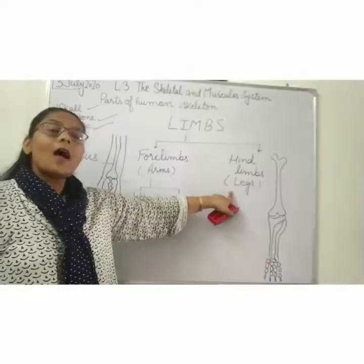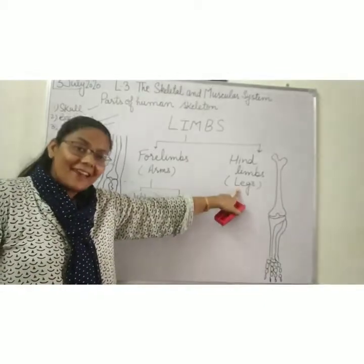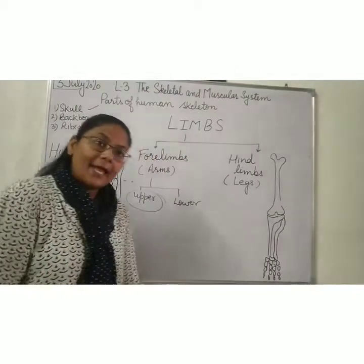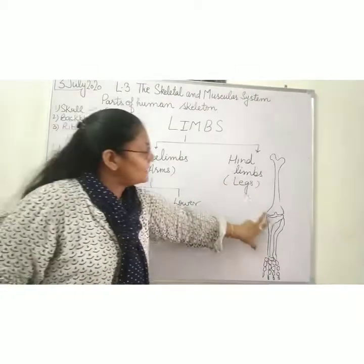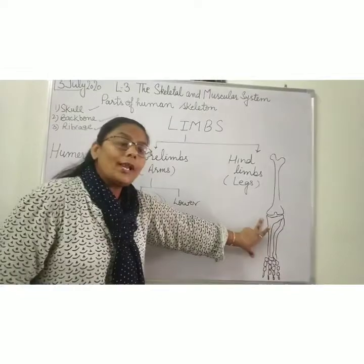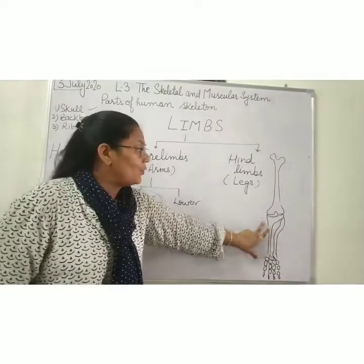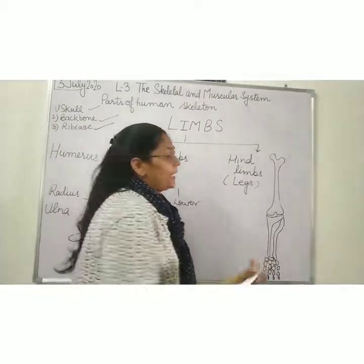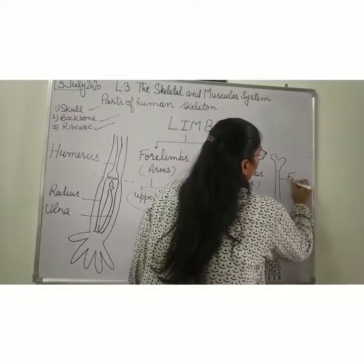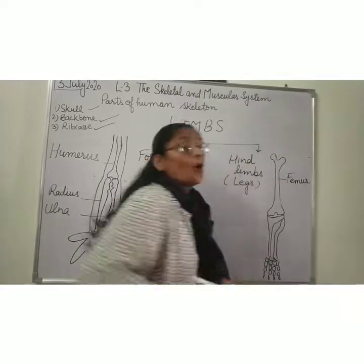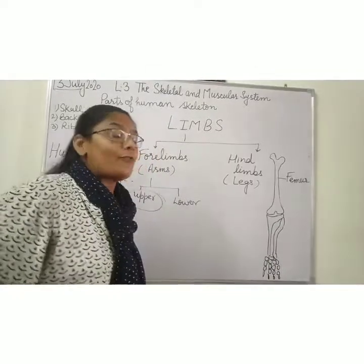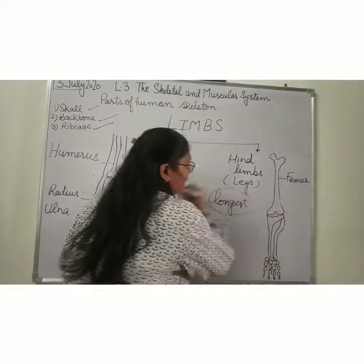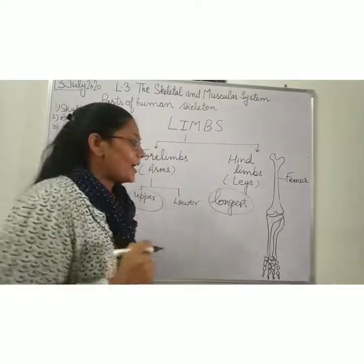Now we come to the hind limbs — that is, our legs. This is the portion of the upper leg or upper hind limb, and this is the portion of the lower leg or lower hind limb. The bone present in the upper hind limb is called the femur. Femur is the longest bone of our body — very important, remember this.